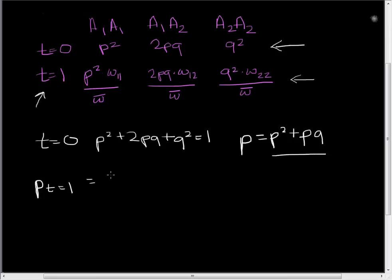We're going to have p squared times the fitness for our A₁A₁ individuals divided by the average fitness for the population. And instead of pq, we're going to have this number here - we're going to just take out that two because we don't need it - so this is going to be pq times the average fitness of our pq individuals divided by the average fitness of the whole population.